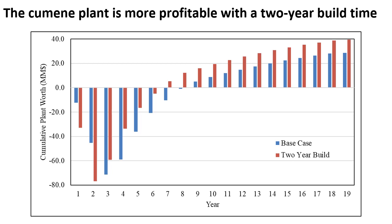The cumene plant is more profitable with a two-year build time. This sensitivity analysis compares the three-year base case to a two-year build period. The ATROR increases from 19.5% to 22.5%, the cumulative plant net worth increases by $10.8 million, and the plant is paid off one year sooner. The plant is recommended to be built if construction can take two years, though this analysis does not account for any increases in construction costs for shortening the build period, and additional economic analysis would be needed.